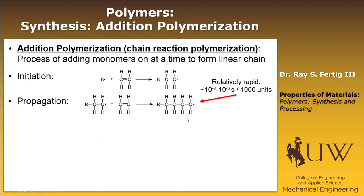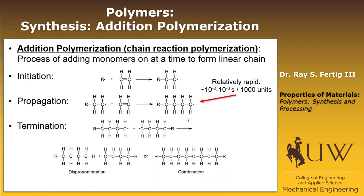That process is relatively rapid, so it might take a hundredth or a thousandth of a second to form, let's say, 1,000 units during this phase. Finally, we have to terminate this process. There's a termination phase, and basically two options: the chains could bond and form a terminated combination, or they could do what's called disproportionation, where one of the hydrogens bonds in that region and a double bond forms with that carbon. Those are your two options to terminate the addition polymerization, or chain reaction polymerization.